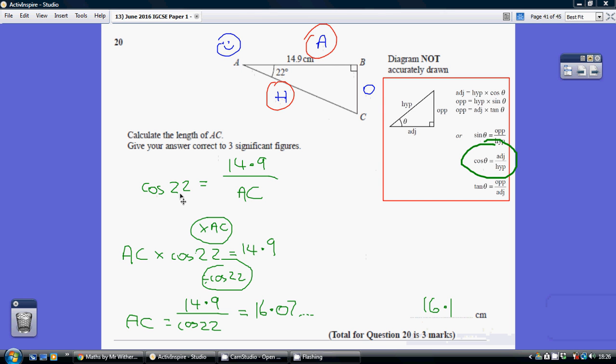So cosine angle—angle, it's always the angle after your chosen ratio—equals my adjacent side of 14.9 divided by my hypotenuse side, which I don't know. That's the length AC.